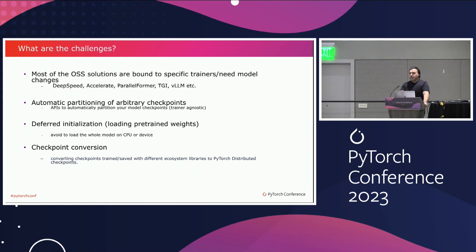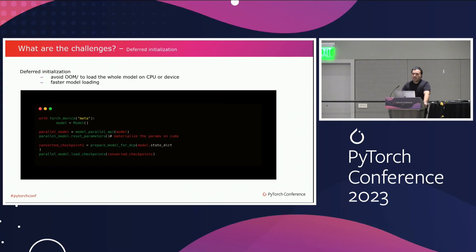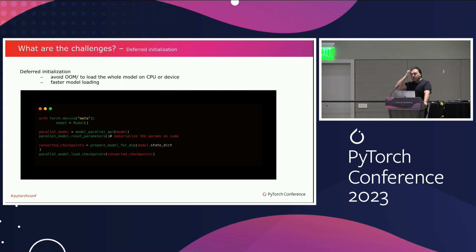The other two challenges are deferred initialization, as Mark talked about — it can help you load your model faster and avoid OOMs on CPU and GPU in some cases. Then we have checkpoint conversion. With deferred initialization, you initialize your model with a meta device, ask the model parallel API to parallelize your model, then materialize your parameters. There is an extra step where you have to convert your model checkpoints into something PyTorch distributed understands, which is basically D-tensors. Then you can use PyTorch distributed checkpoint APIs to load the model. We are working to remove this checkpoint conversion step.